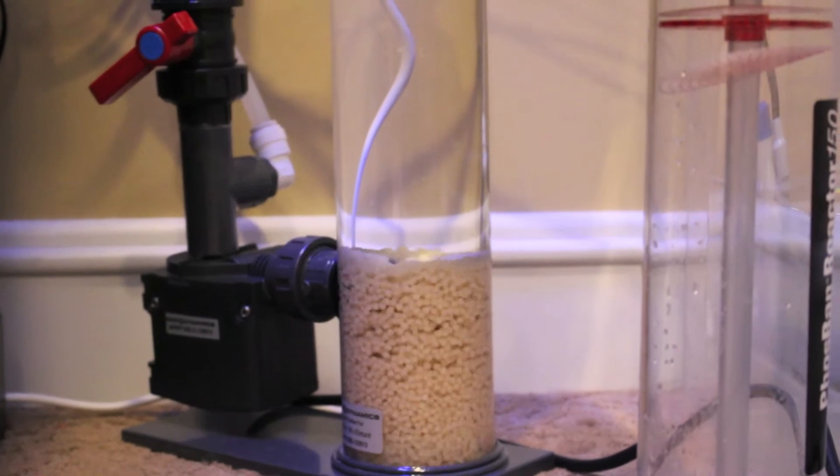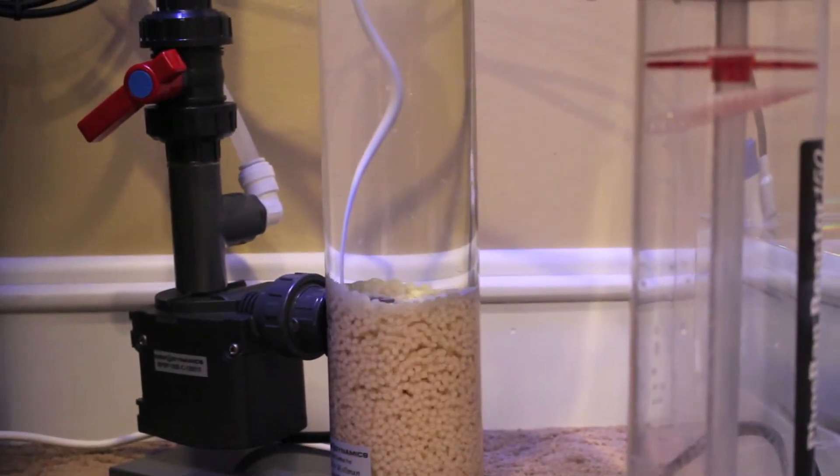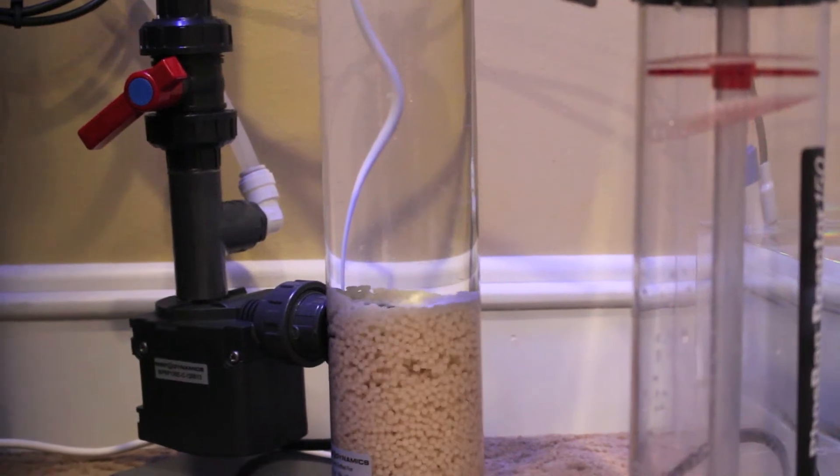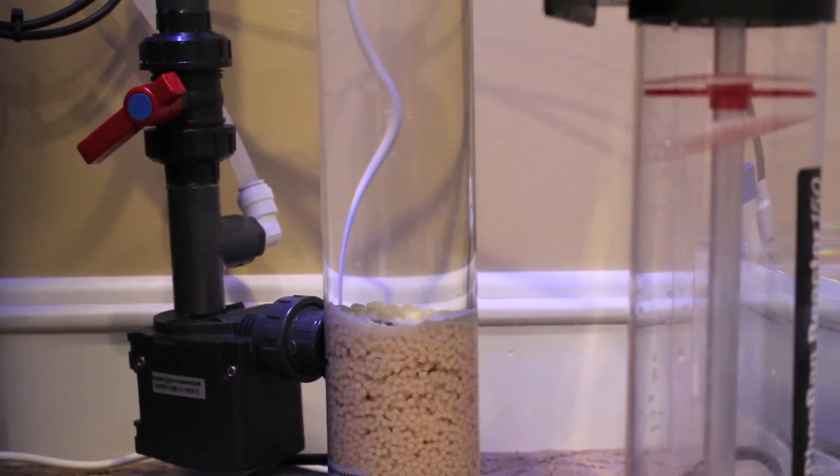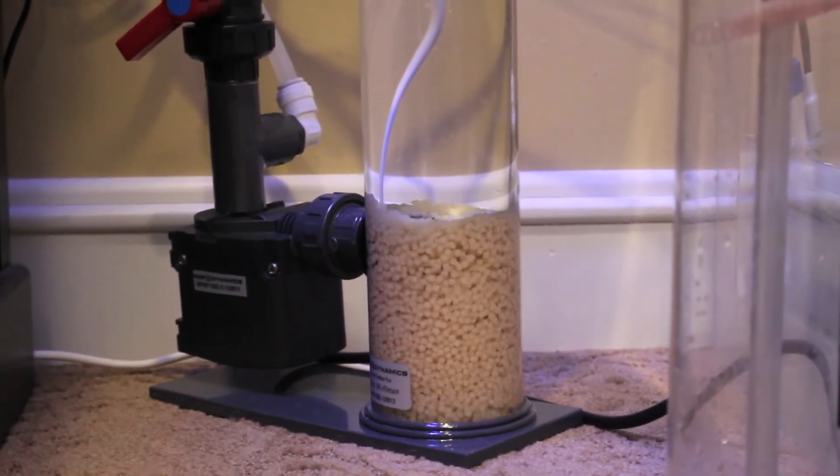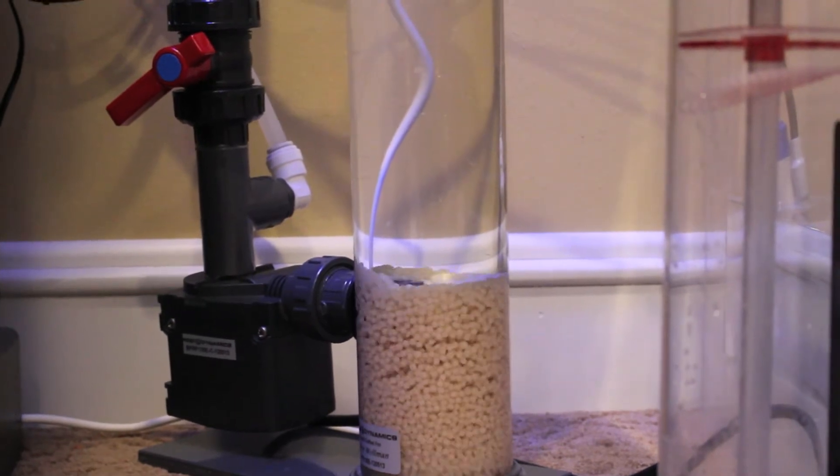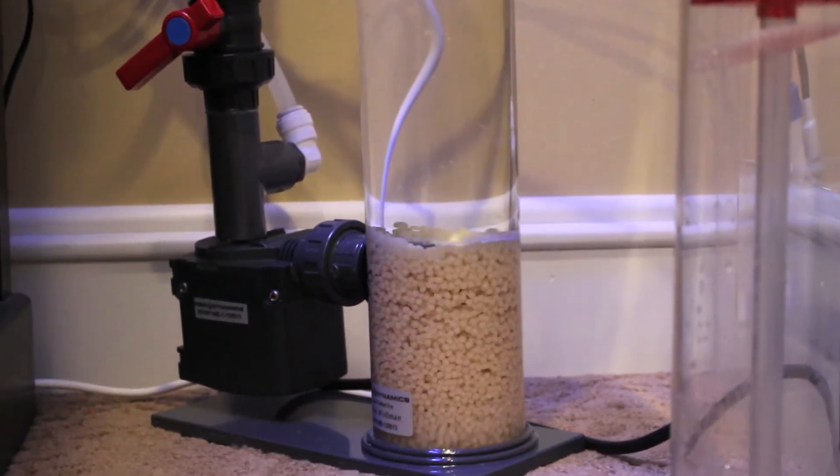Basically as the bacteria is growing and consuming nutrients in your tank, what ends up happening through the tumbling action is the bacteria are pushed off of the biopellets and then released through the outlet of your reactor back into your system.